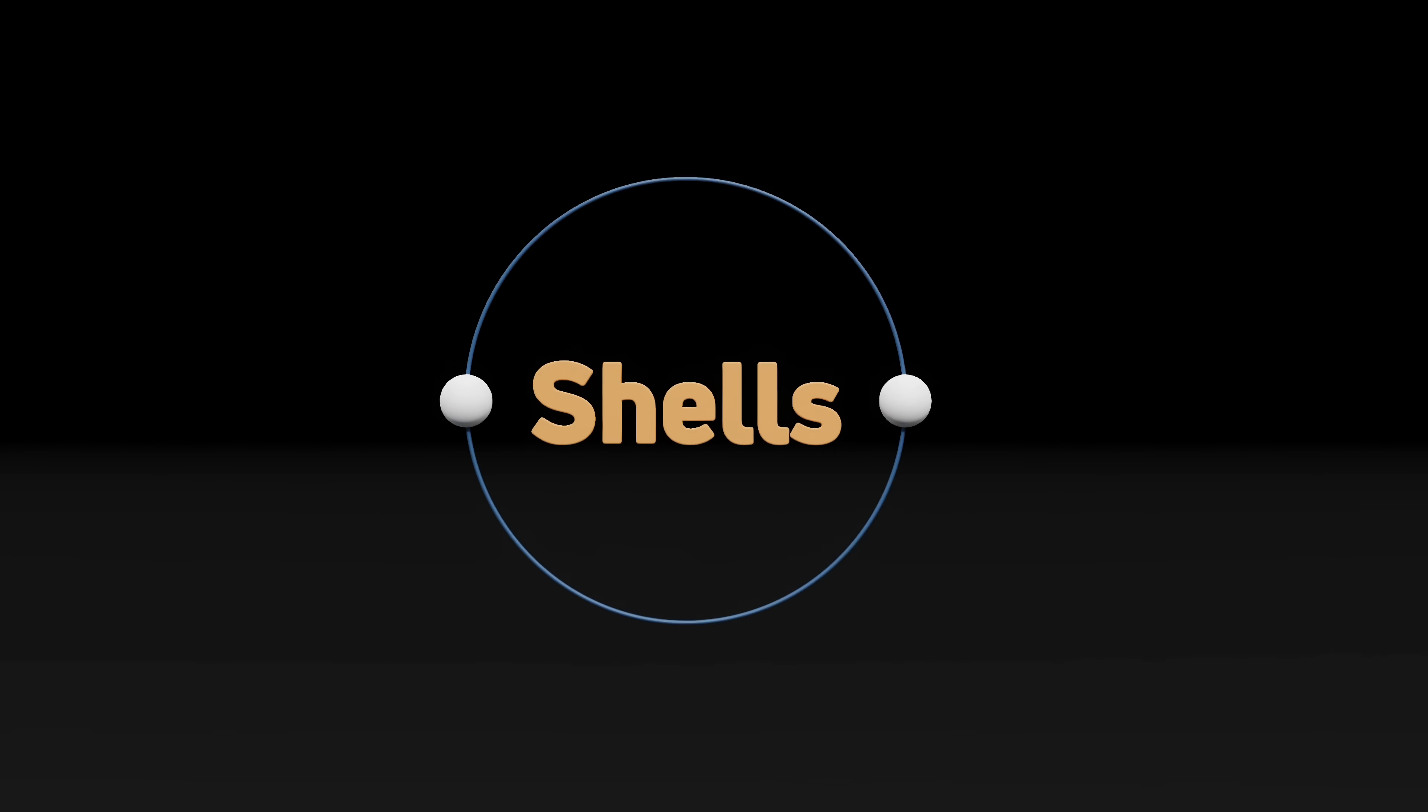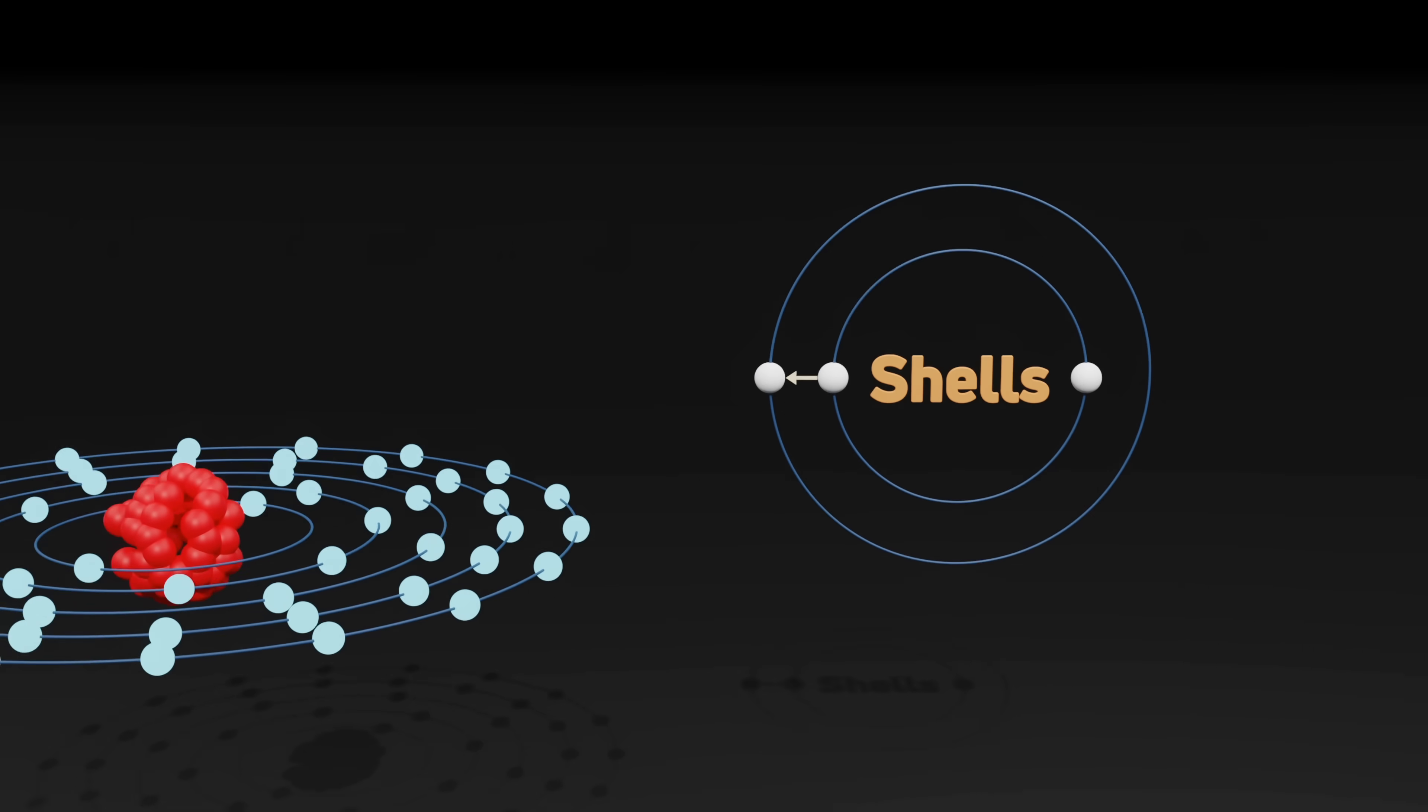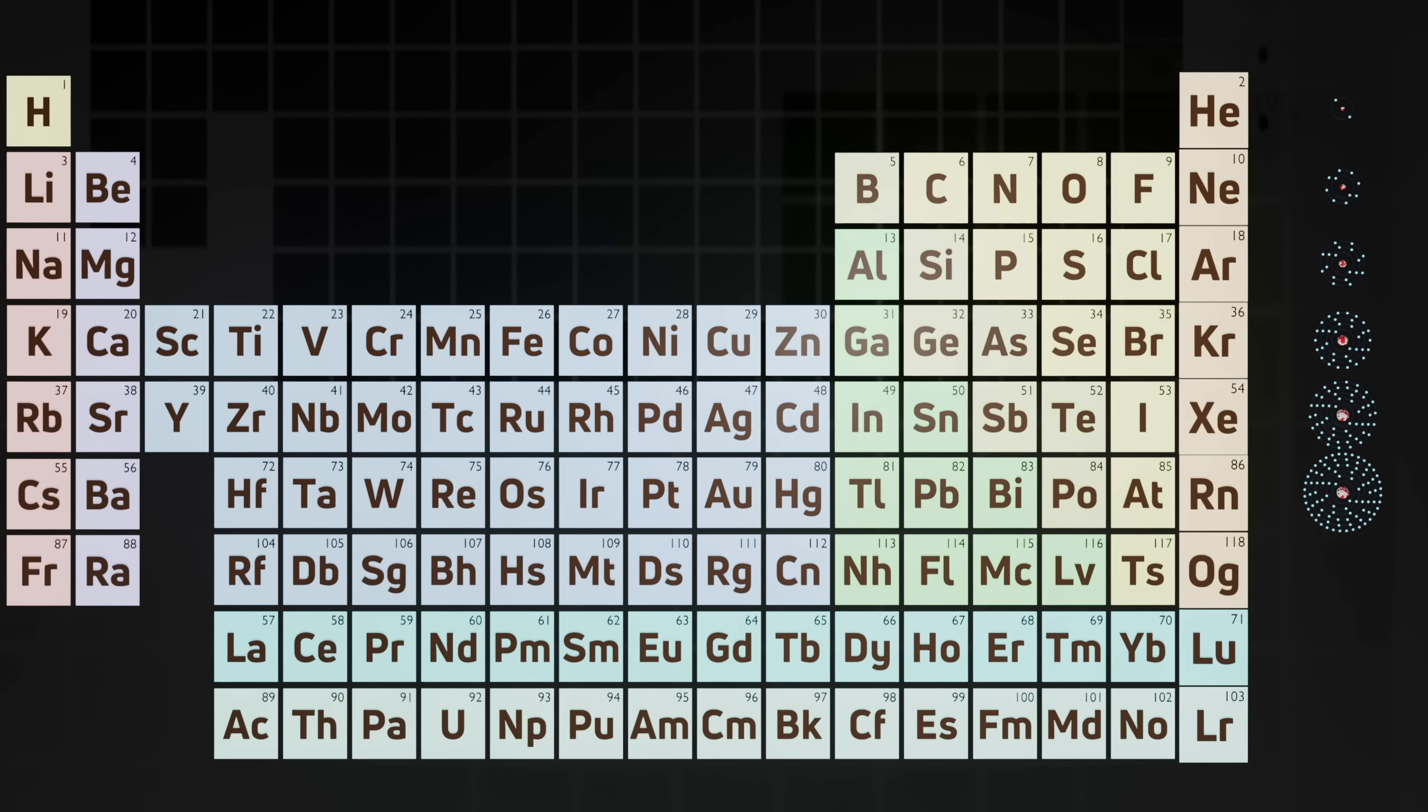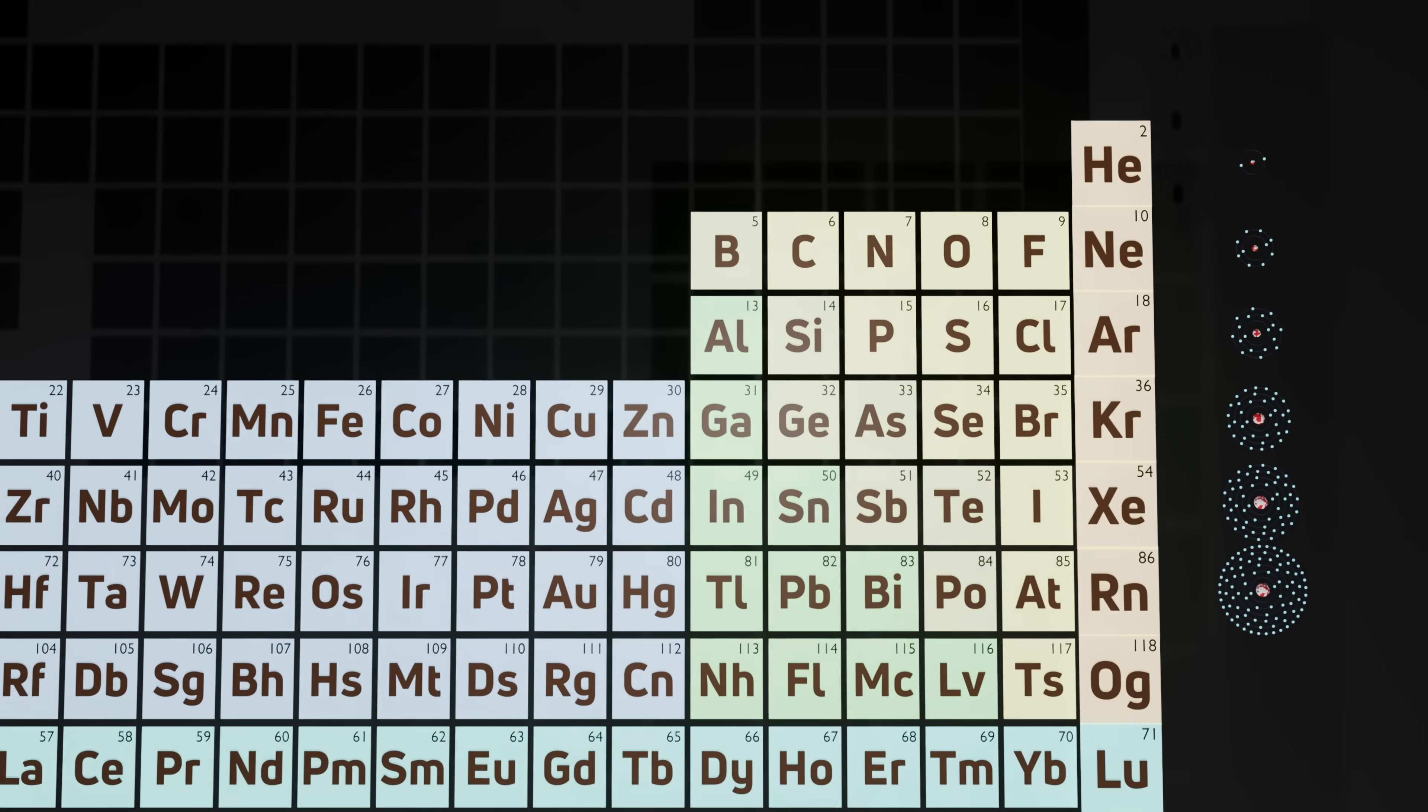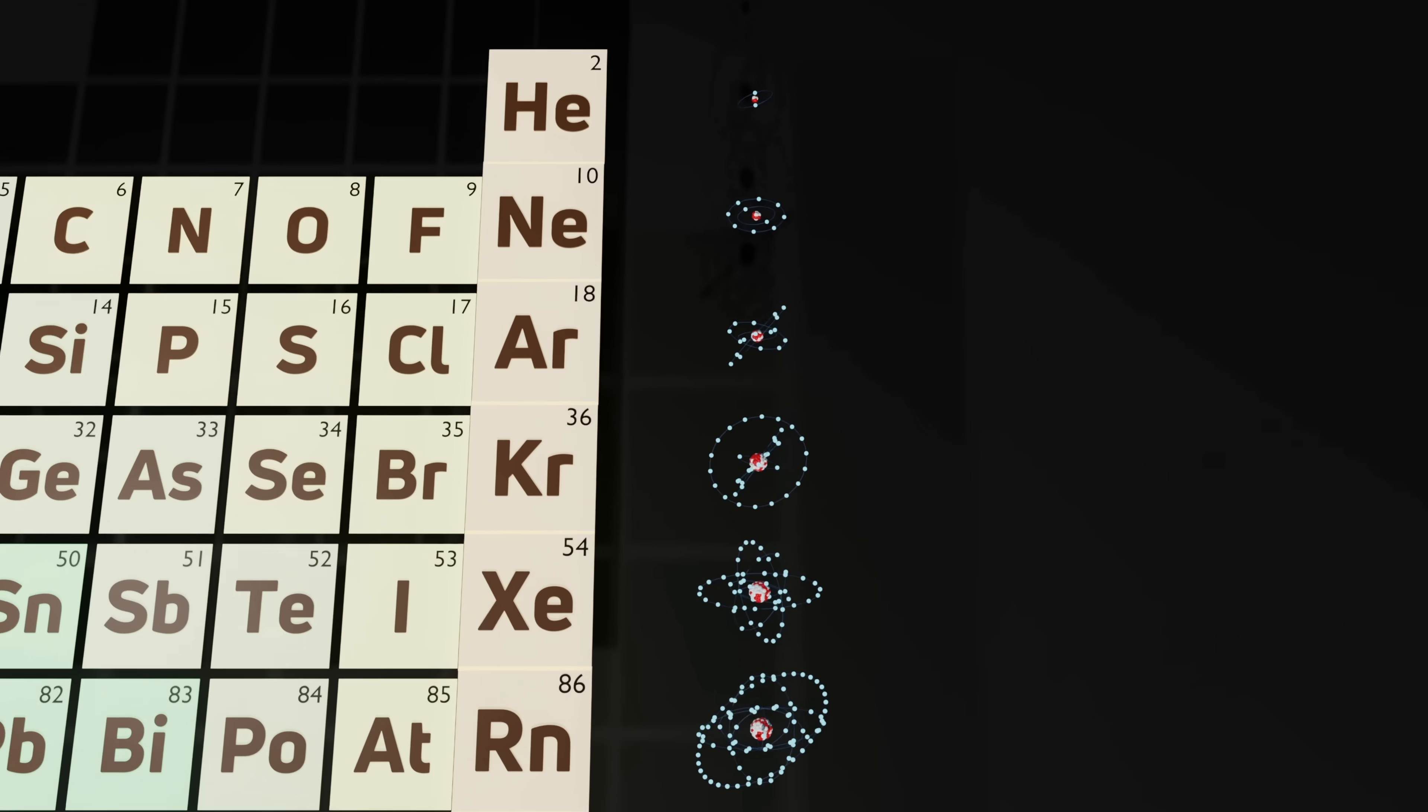Once you fill one of these shells, filling the next requires a little more energy. Electron shells are easily identifiable on the periodic table. They are the noble gases. These represent completely full electron shells. If you wish to add another electron, you must do so in a new, larger volume.